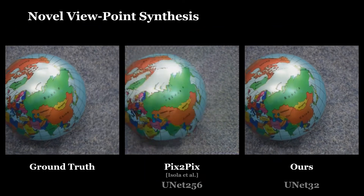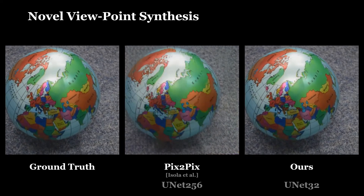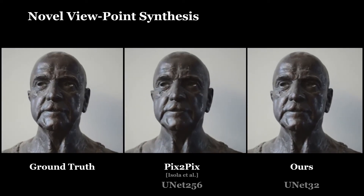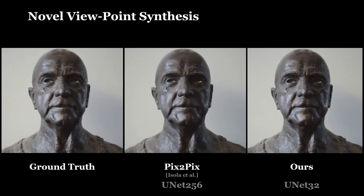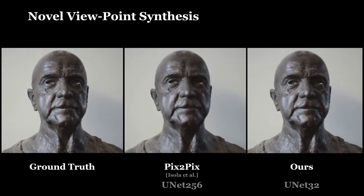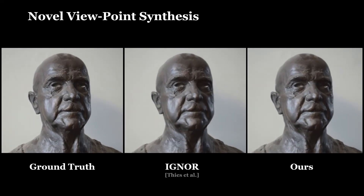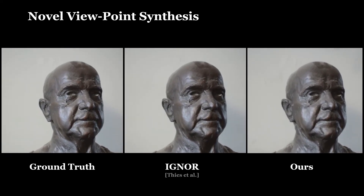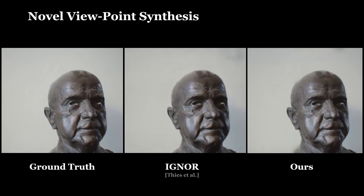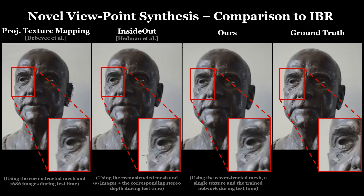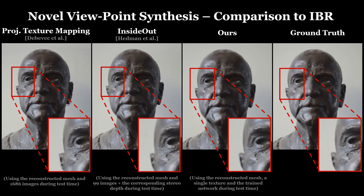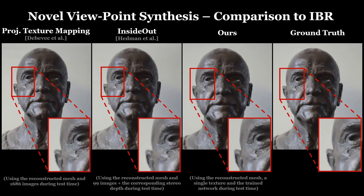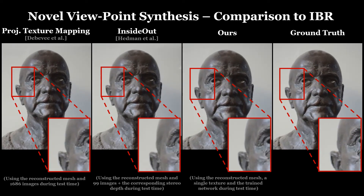Here we show a comparison to the image-to-image translation approach Pix2Pix, as well as an image-guided neural object rendering approach. Additionally, we compare against classical image-based rendering techniques. As can be seen in the close-ups, our approach is able to handle the imperfections in geometry.